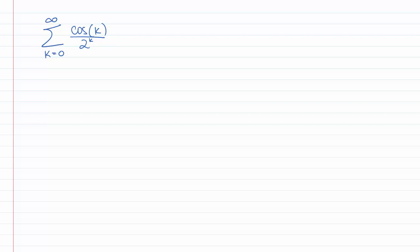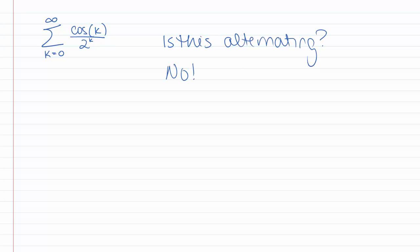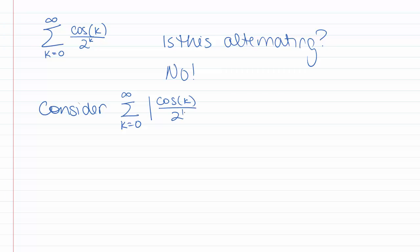Let's try another example. We have the sum k goes from 0 to infinity of cosine of k over 2 to the k. First question: is this an alternating series? The answer is no. The cosine of k does change signs, but it doesn't change signs every other term, so it's not alternating. Since it's not alternating and not all positive, the only thing we really know how to do is check for absolute convergence.